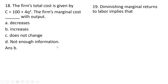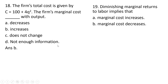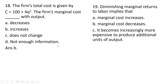Question 19. Diminishing marginal returns to labor implies that marginal cost increases, and it becomes increasingly more expensive to produce additional units of output. Answer choices A and C mean the same thing, so answer choice D — all of the above — is correct.